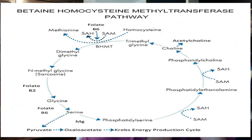I just want to give you an idea of where those substrates are situated and how important they are for this methyl group production. At six o'clock, you see phosphatidylserine; at four o'clock, phosphatidylethanolamine; at two o'clock, phosphatidylcholine. You may recognize those as PS, PC, PE. That is why PSPCPE pushes the shortcut pathway.